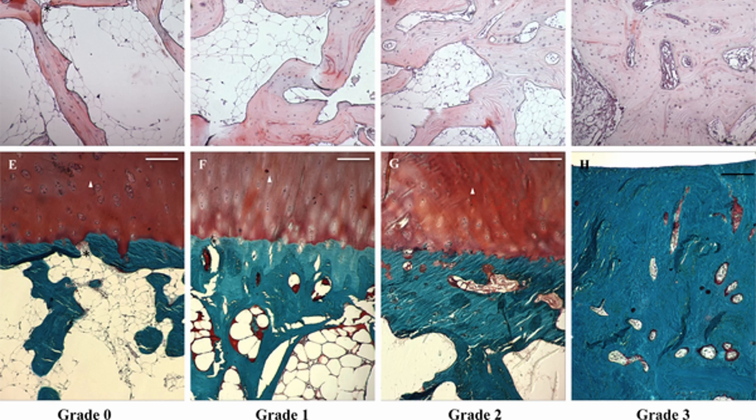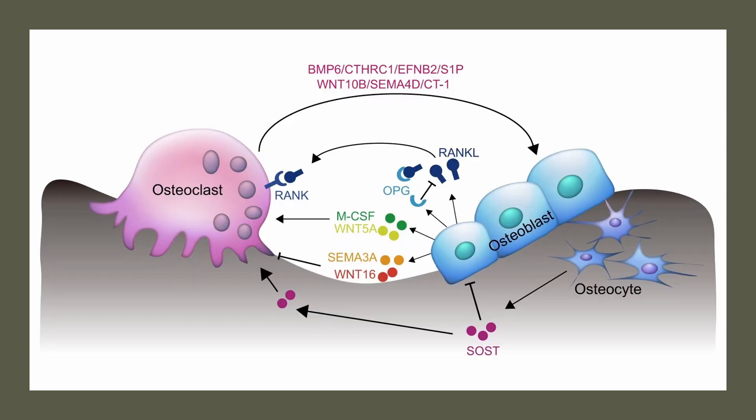Histologically, sclerosis of the subchondral bone marrow is characterized by increased bone density, typically resulting from an augmented formation of new bone — osteogenesis — seen in conditions like osteoarthritis and avascular necrosis. This creation of new bone is predominantly driven by cells known as osteoblasts, while the activity of osteoclasts, which break down bone tissue, may be diminished.